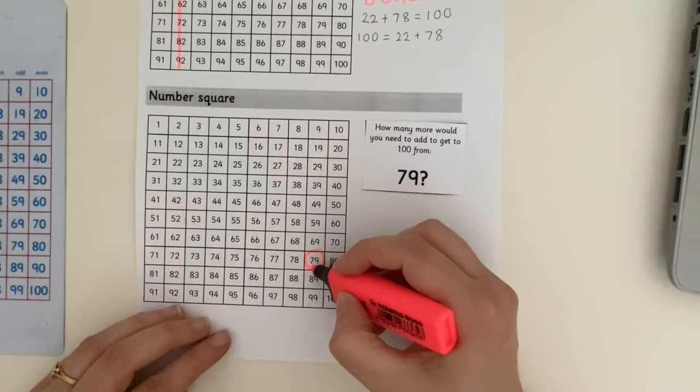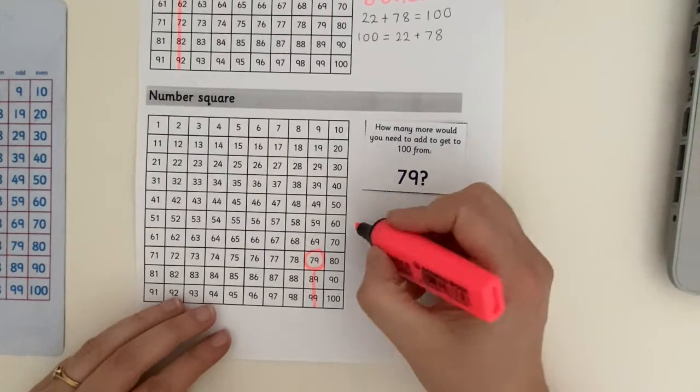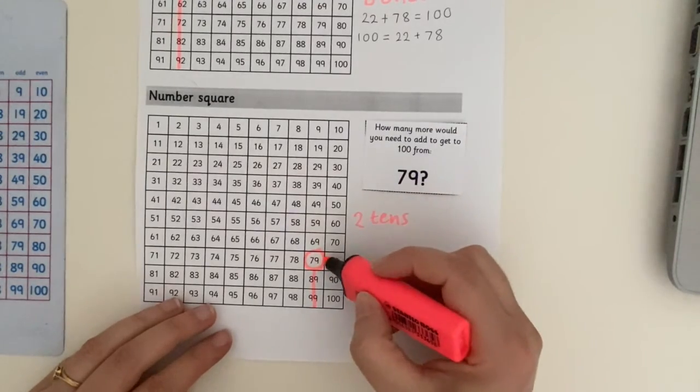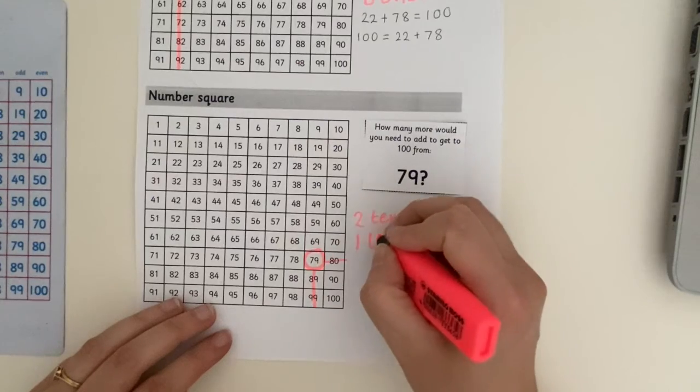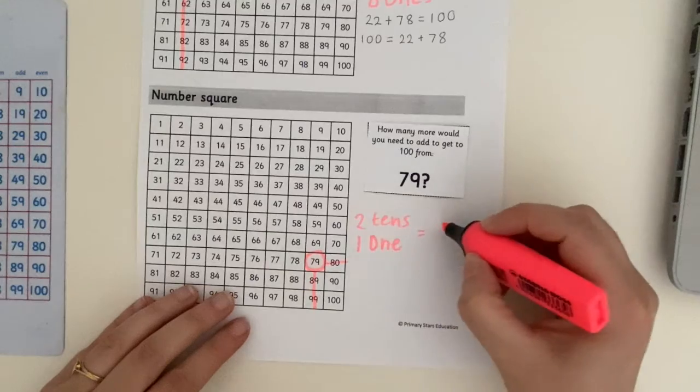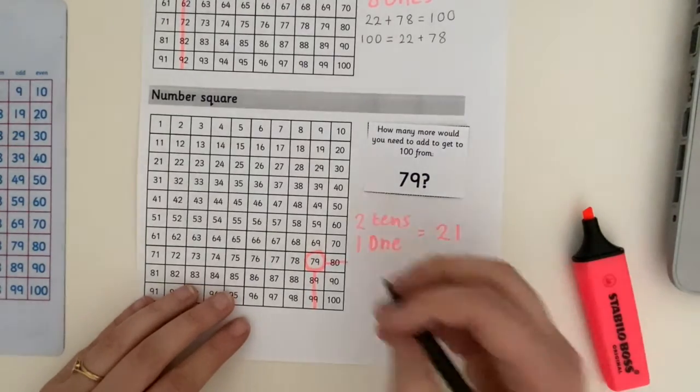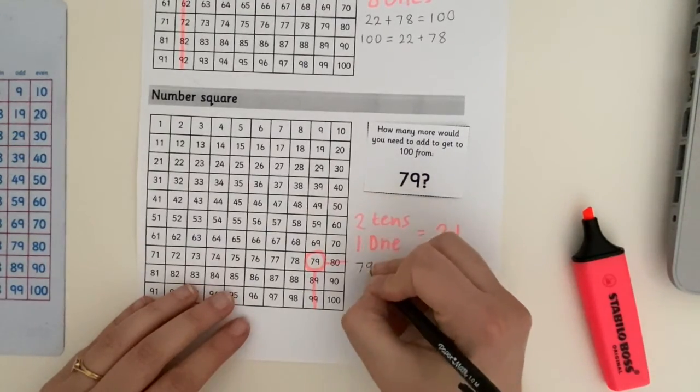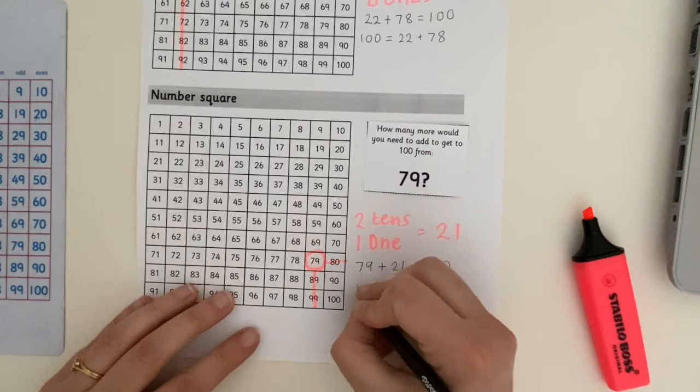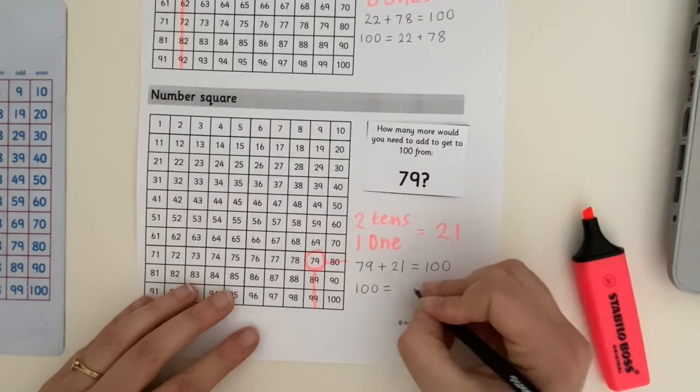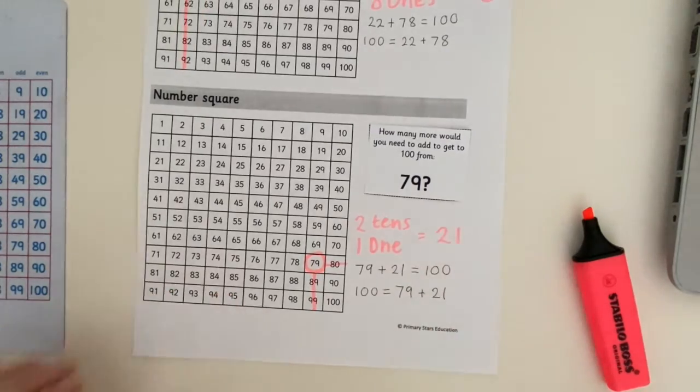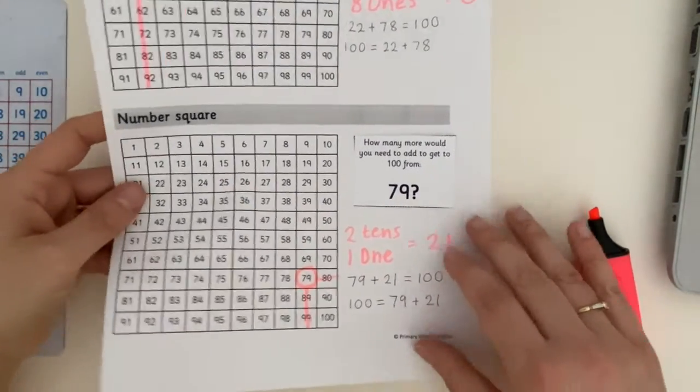Okay. How many tens do we need to go? One, two, two tens. How many ones? That was easy, wasn't it? Just one. Okay. That equals 21. So 79 add 21 equals 100. 100 equals 79 add 21. See, this is very, very simple. I know that you can all do this.